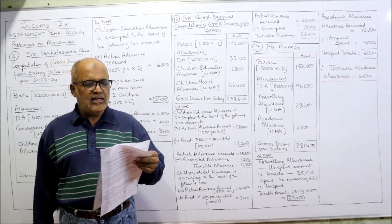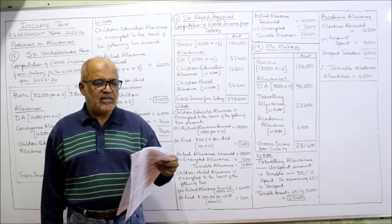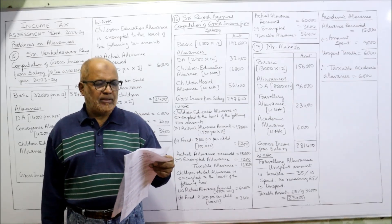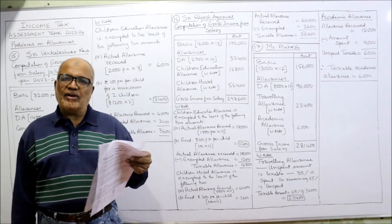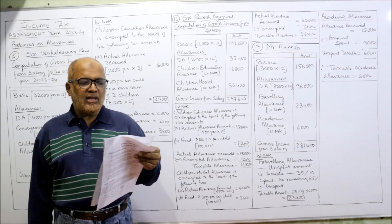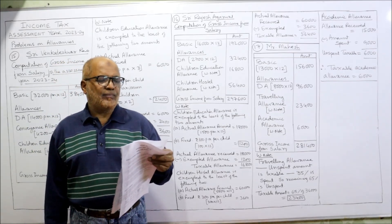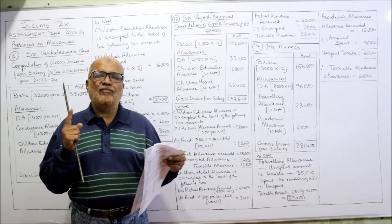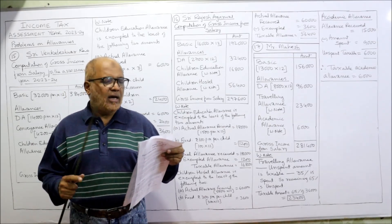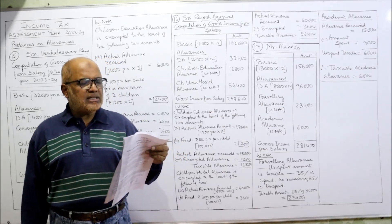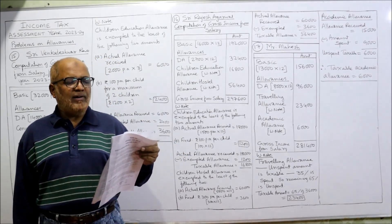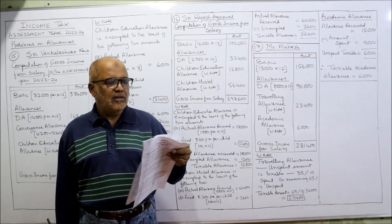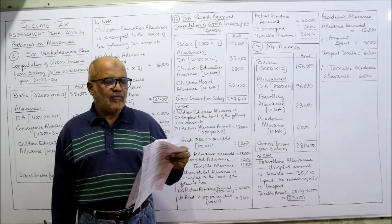Sri Rajesh Agarwal is working in a limited company in Surat. His salary particulars: basic pay 16,000 per month, DA 2,700 per month, children's education allowance for his daughter 1,500 per month — meaning the allowance is given for one child only. Hostel allowance for his son 5,000 per month, and actual amount spent 2,000 per month. Calculate gross income from salary.